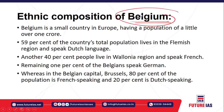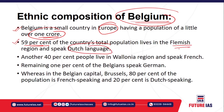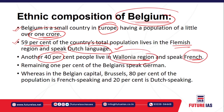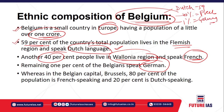The second case study is the ethnic composition of Belgium. Belgium is a small country in Europe with a population of about one crore — compared to India's 121 crore. Out of Belgium's population, 59 percent speak Dutch and live in the Flemish region, 40 percent speak French and live in the Wallonia region, and around 1 percent speak German.